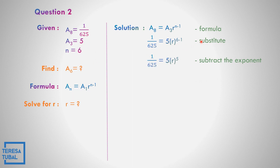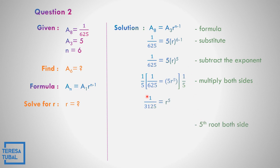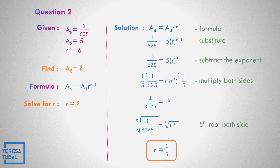Subtracting the exponents gives 6 minus 1 equals 5. To cancel 5, multiply both sides by 1/5: 1 times 1 is 1, and 5 times 625 is 3,125, giving 1/3,125 equals r to the fifth. To solve for r, take the 5th root on both sides: the 5th root of 1/3,125 equals r. So the common ratio r is equal to 1/5.